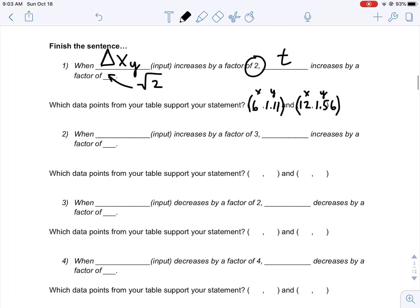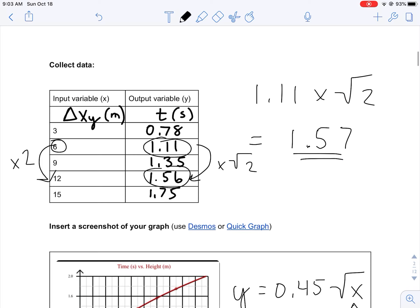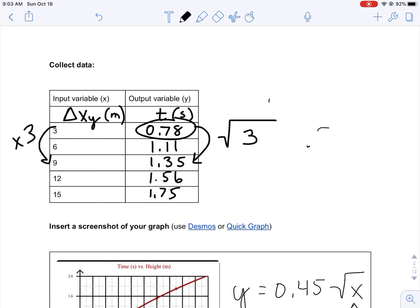Similarly, increasing by a factor of three would mean you're going from—instead of going from six to twelve, that would be a factor of two. Factor of three would mean three to nine. Three times three gives you nine, so that's increasing by a factor of three. In this case, the value for 0.78 doesn't increase by a factor of two or square root of two. This time it'll be the square root of three.